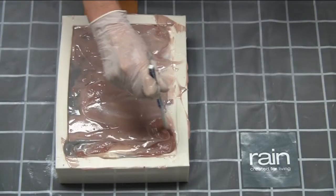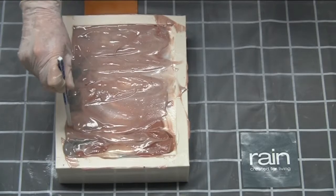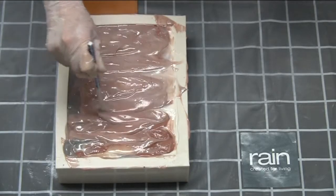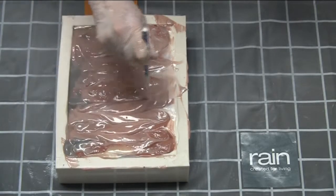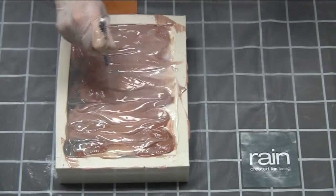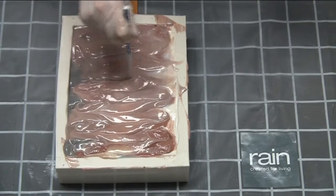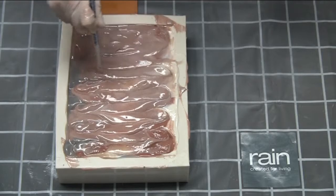Then take a chopstick and draw a swirl pattern through the soap. First of all, going horizontally, all the way down the loaf.